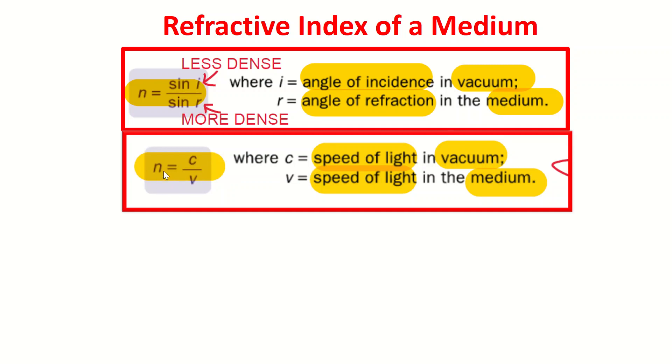An easier way to calculate the refractive index is to use the ratio of speed of light in vacuum over speed of light in medium.